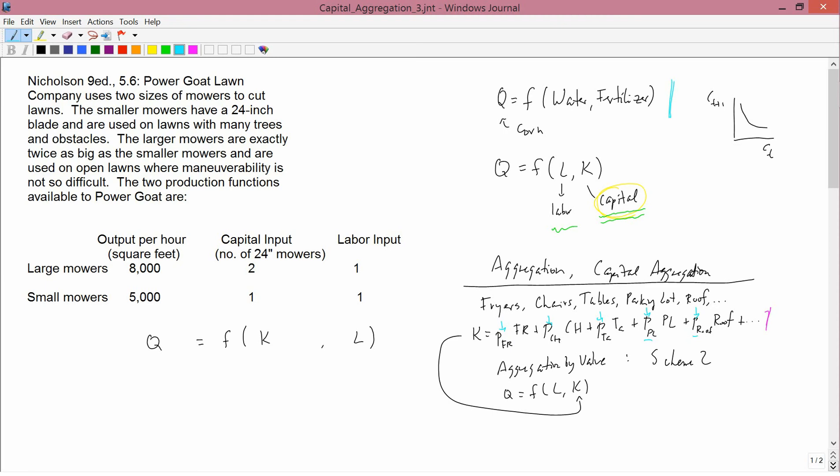So aggregation by value is a problem. In microeconomics, we don't have to ever aggregate if we don't want to. And I'm going to illustrate that with using the problem on the left in just a minute.